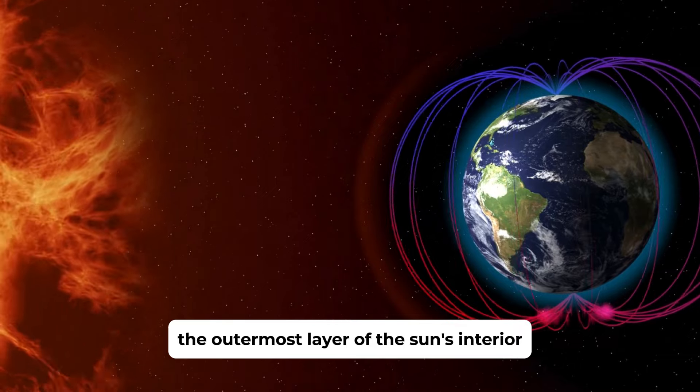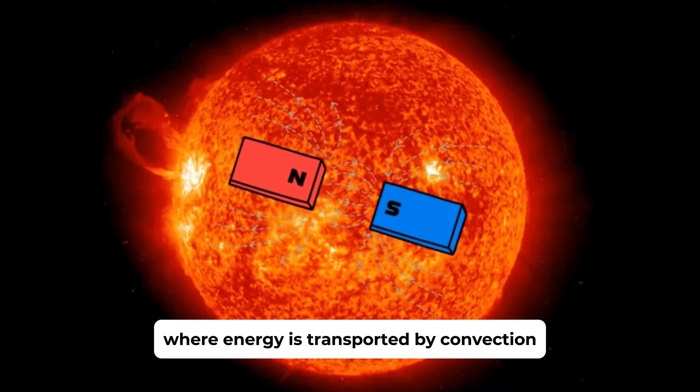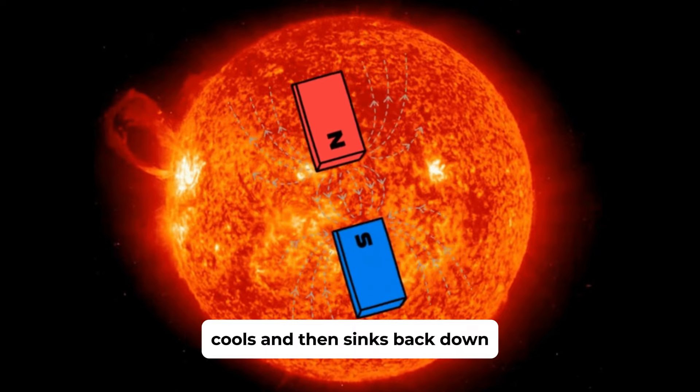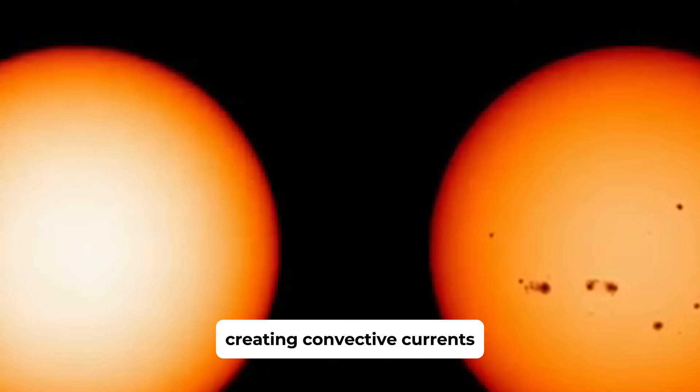The outermost layer of the Sun's interior is the convective zone, where energy is transported by convection. Hot plasma rises towards the surface, cools, and then sinks back down, creating convective currents.